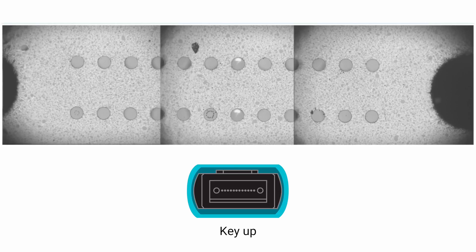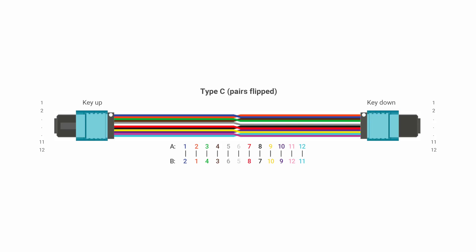In this next demo, you can see that when I light up each fiber of the cable from left to right, it lights up pair after pair at the other end. This is a type C or twisted pair polarity cable. P1 goes to P2 and P2 goes to P1, and so on, pair after pair.